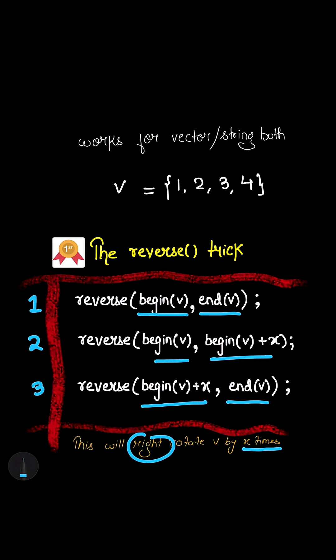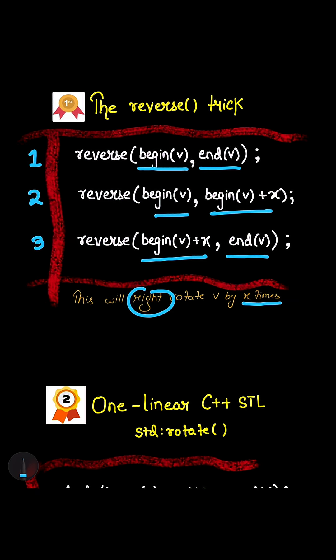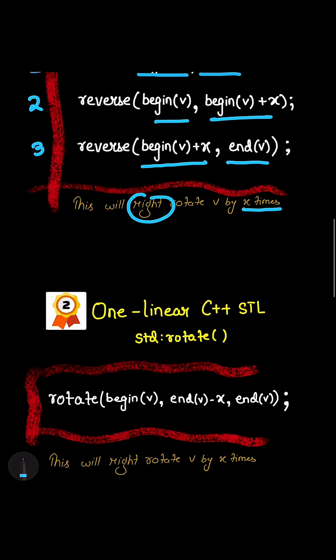Now the second trick is the simple one-liner C++ STL rotate, that is rotate begin v and v minus of x, that is rotating it right x times till end of v.